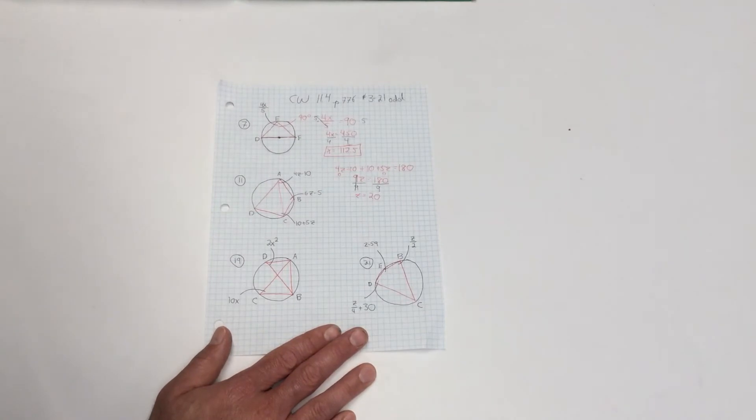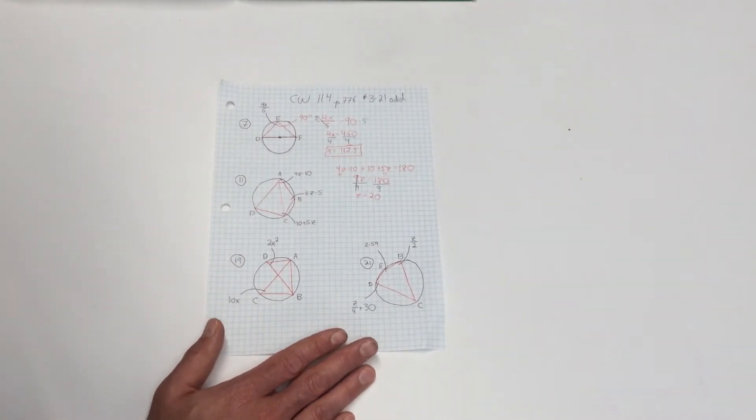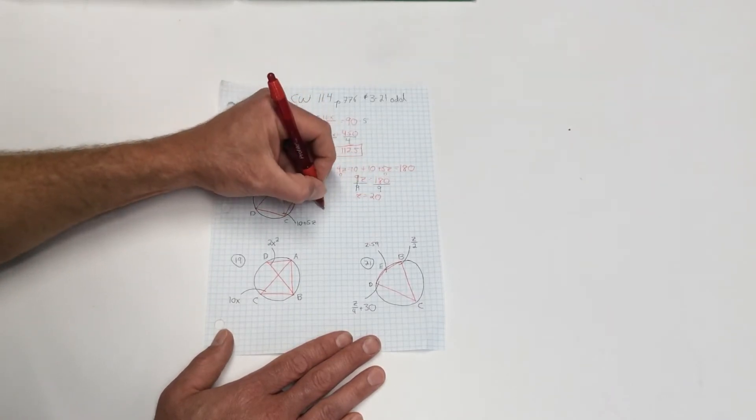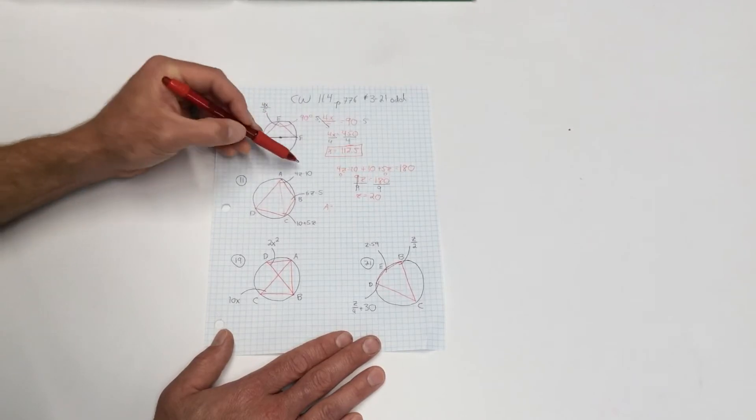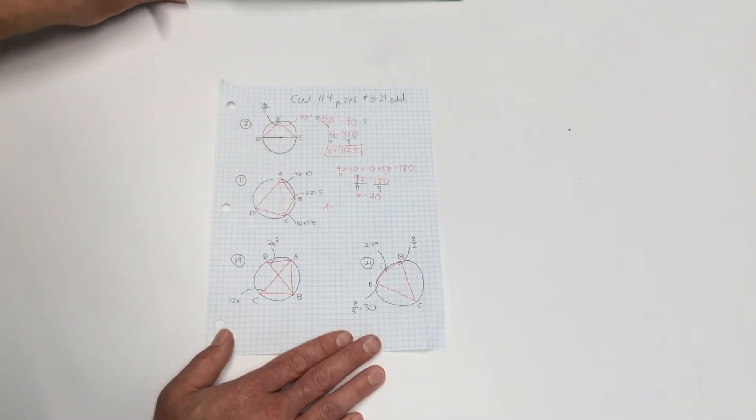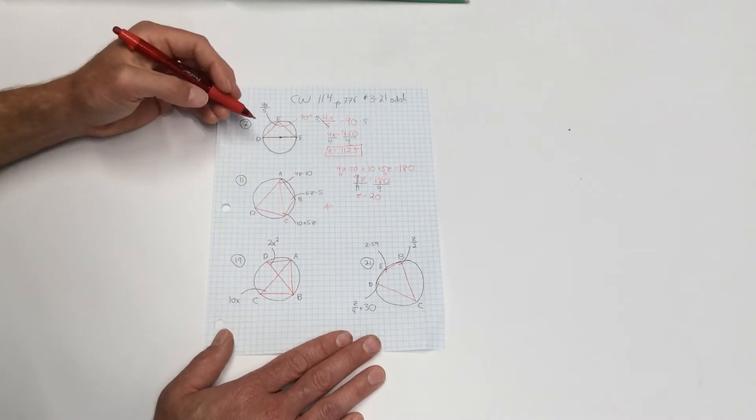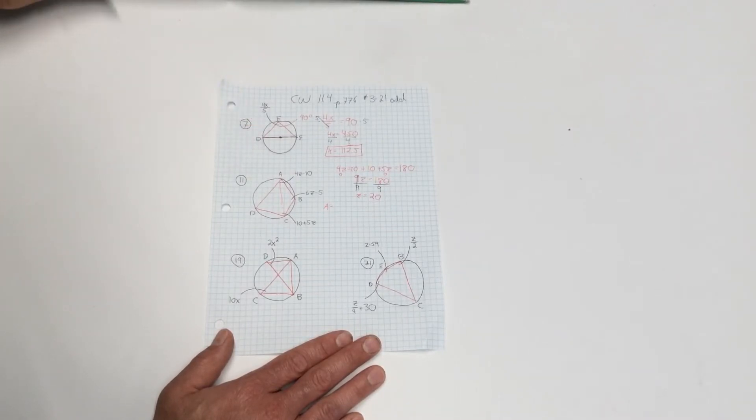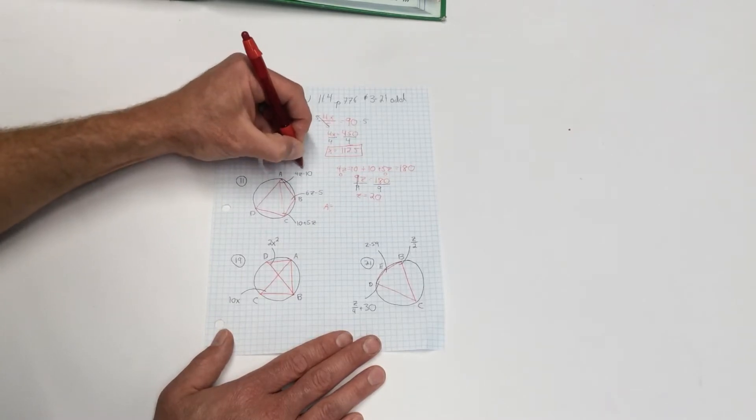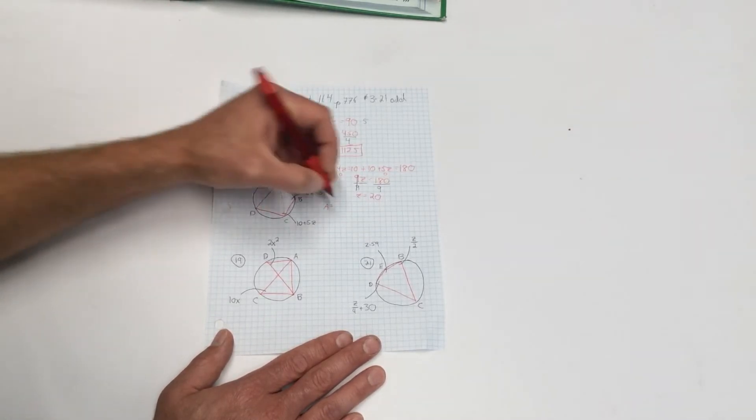And from there on out, I can go ahead and start to solve for my various angles. Let's see. 20 plugged into angle A is 20 times 4 is 80. 80 minus 10 is 70 degrees. So I know that angle A is 70.